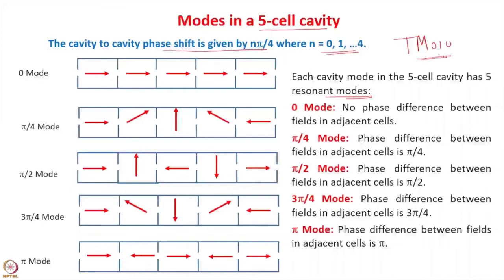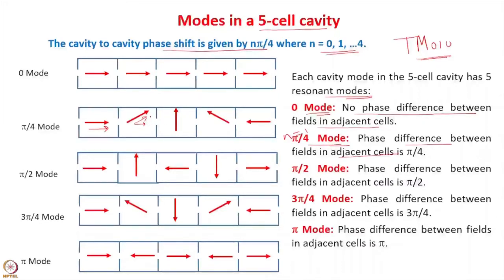The TM010 mode will split into 5 modes. For n = 0, we have the 0 mode — there is no phase difference between the fields in adjacent cells. For n = 1, we have the π/4 mode, where the phase difference between adjacent cells is π/4. In the first cell the field is in the forward direction; in the next cell there is a phase shift of π/4, so the magnitude of the field in the z direction is reduced. In the following cell there is again a phase shift of π/4, so there is no field in the z direction.